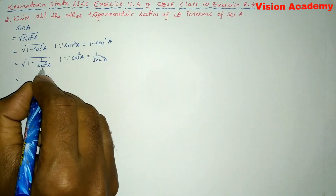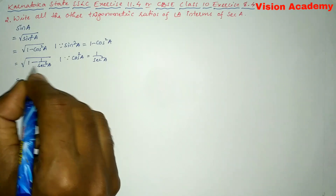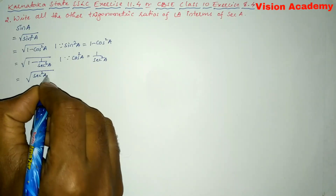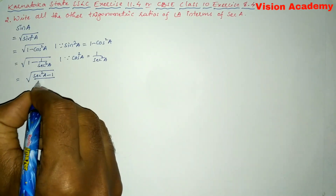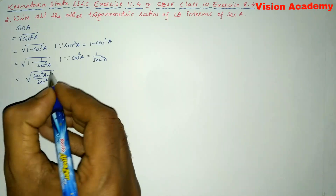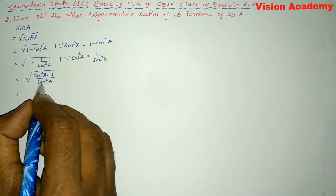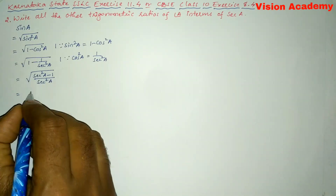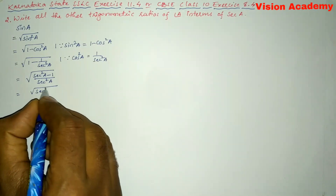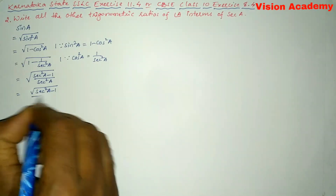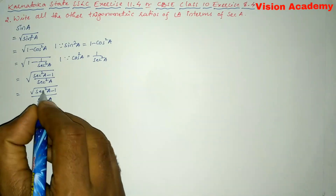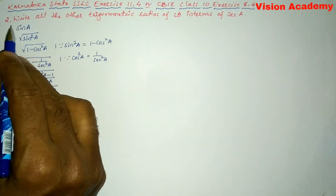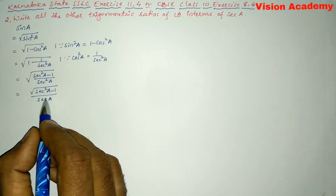Now we will take the LCM and multiply sec²A into 1. So we get square root of (sec²A × 1 - 1), all divided by sec²A. Taking sec²A out of the square root gives us sec A, and we get square root of (sec²A - 1) divided by sec A, since the square and square root cancel. We have now written sin A in terms of sec A.